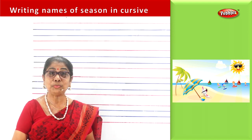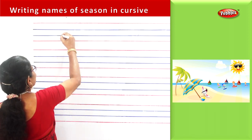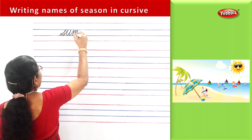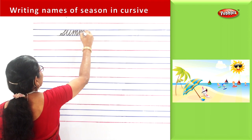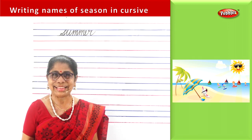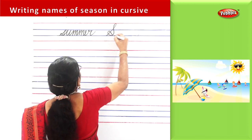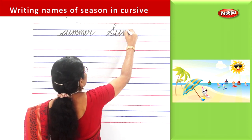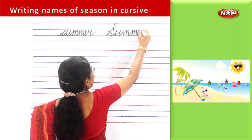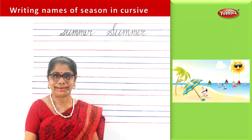Let us write: summer. It is the most beautiful season of the year. Summer season — everyone loves summer season. Let us write: S-U-M-M-E-R. Summer is the time when you see everything green and flowers grow.